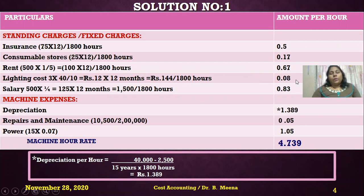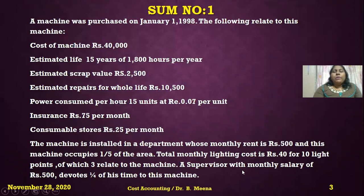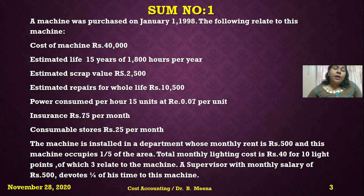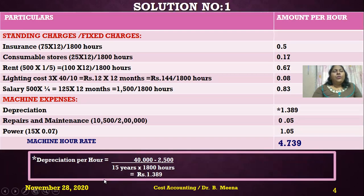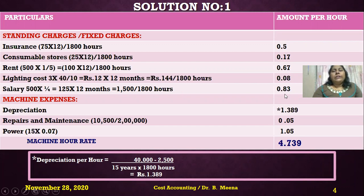Finally, supervisor salary: monthly salary is 500 rupees, but the supervisor devotes only one-fourth of his time to this machine. So machine share = 500 × 1/4 = 125 rupees per month. Per annum: 125 × 12 = 1,500 rupees, divided by 1,800 hours = 0.83 rupees per hour for supervisor salary.